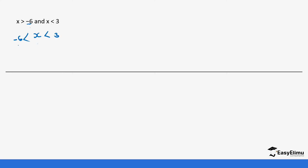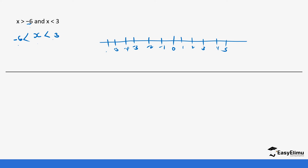The values of x range from negative 6 to 3, so we draw that on a number line. Looking at the statement, there is no equal sign on either side, so negative 6 is not part of the values of x and neither is 3. All the values in between negative 6 and 3 can be x — any value in between.